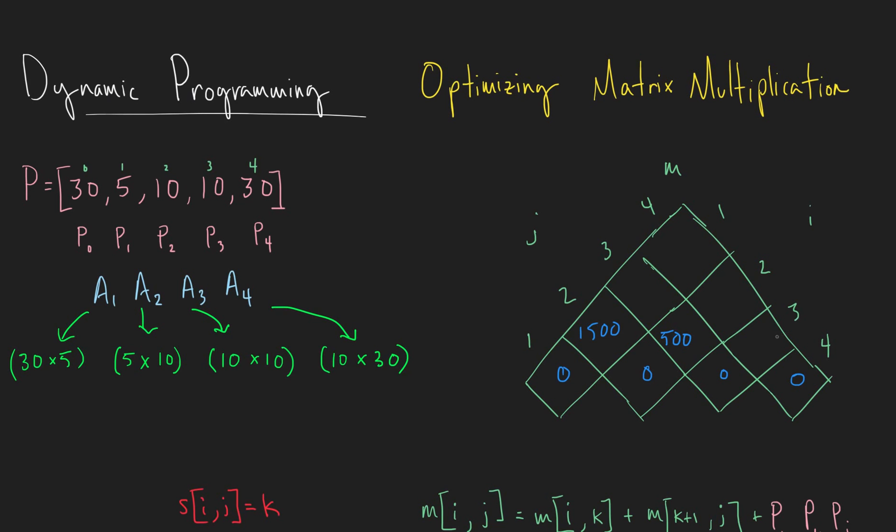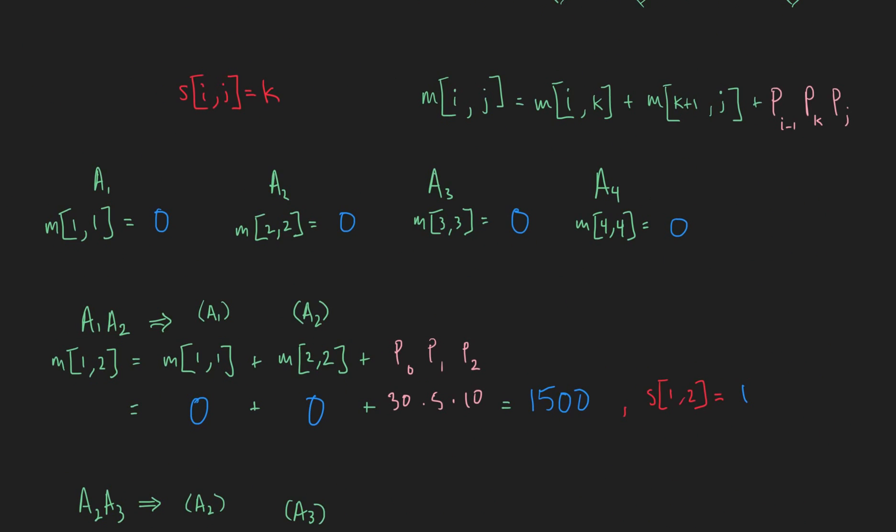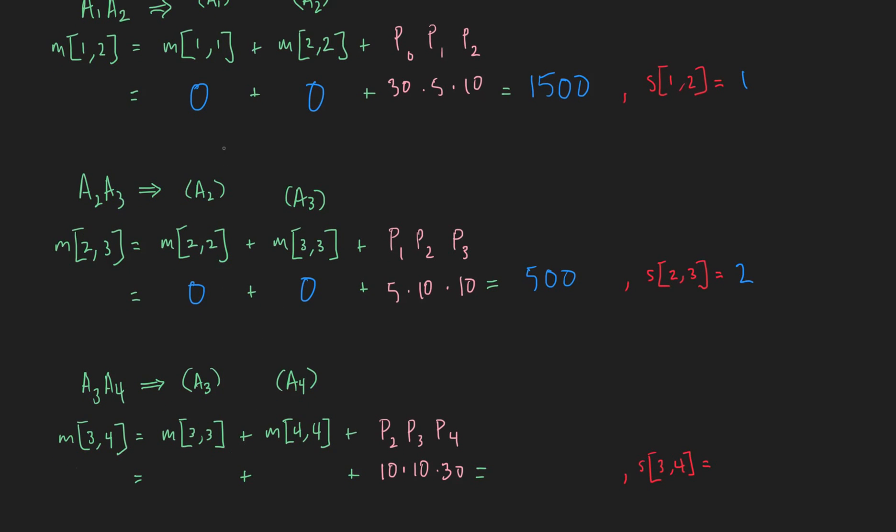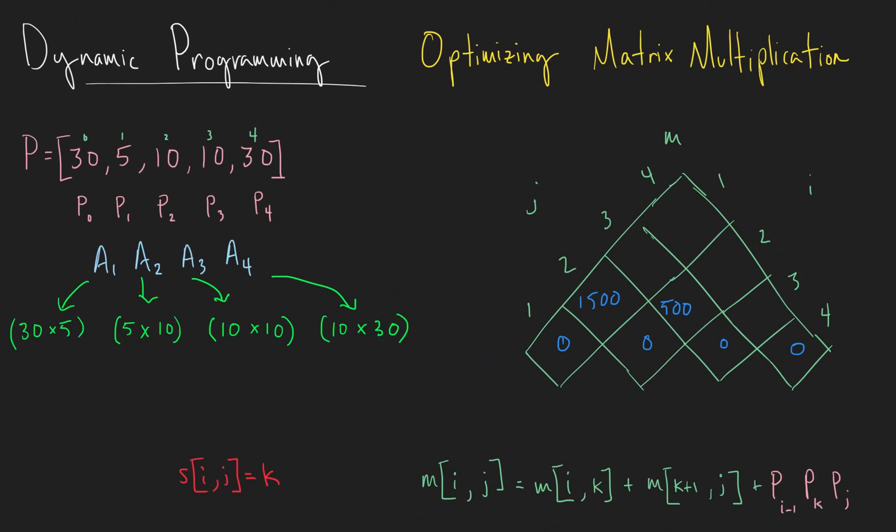And we've got 500, and we can find the next value. So now we're going to do M[3,4]. Similarly to the last two, we're going to fill in 0 and 0. We're trying to split this up. There's only one way to do that. So we get that, and our dimensions come out to be 3000. And our K value is going to be 3. So we can record that as well.